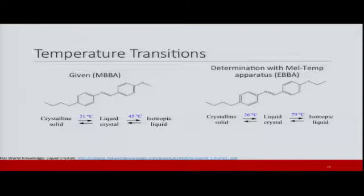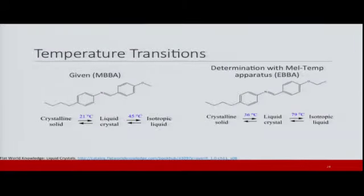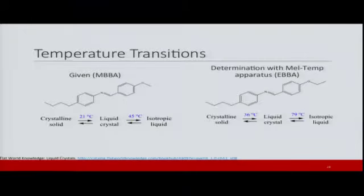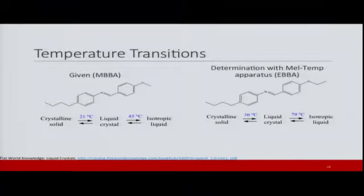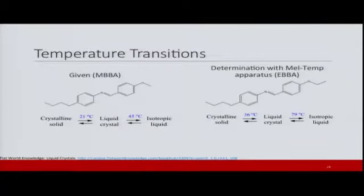Besides helping students understand chirality, we also wanted them to gain some knowledge about liquid crystals, which are technologically very important but not covered in undergraduate courses at all. We gave students the structure of MBBA in their student guides and introduced them to the fact that liquid crystals are an intermediate state between solids and isotropic liquids. We also introduced them to the concept that besides a melting temperature, liquid crystals have a clearing point.